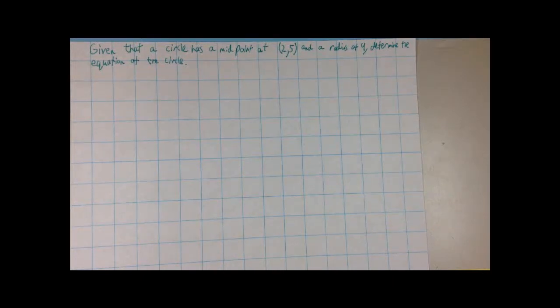For this video, we will be covering this problem. Given that a circle has a midpoint at (2,5) and a radius of 4, determine the equation of the circle.